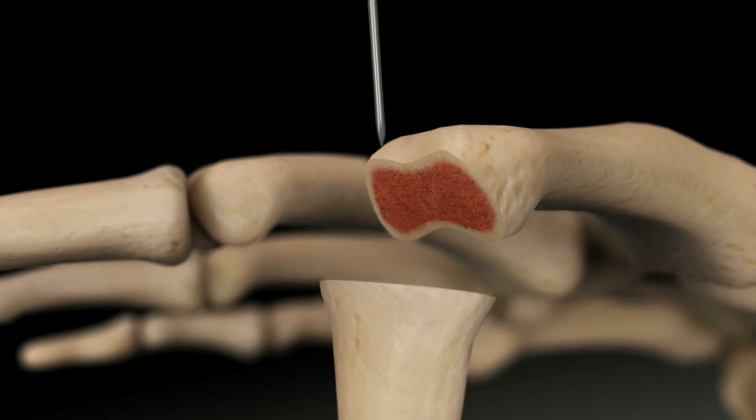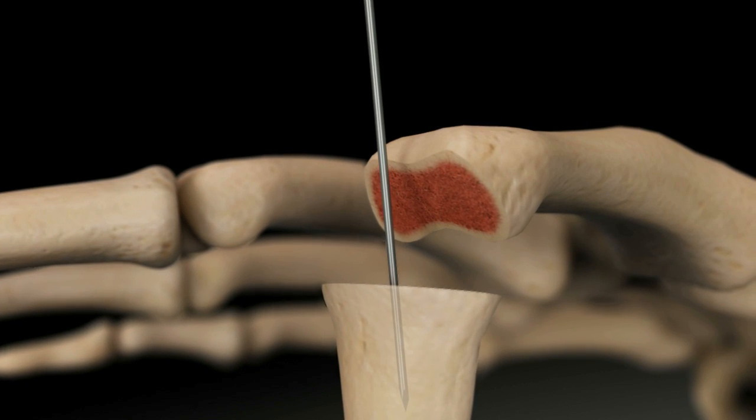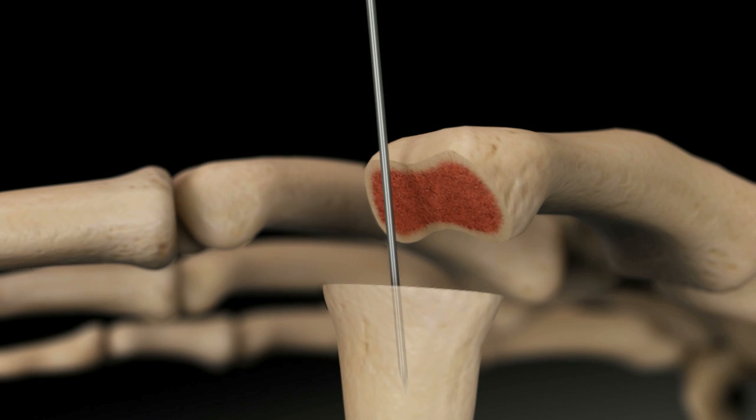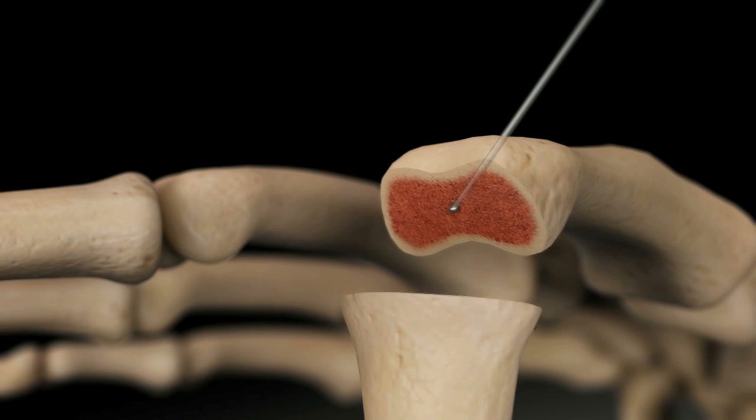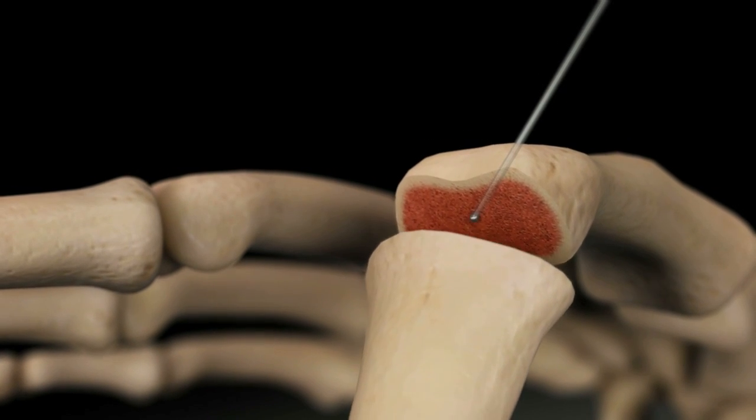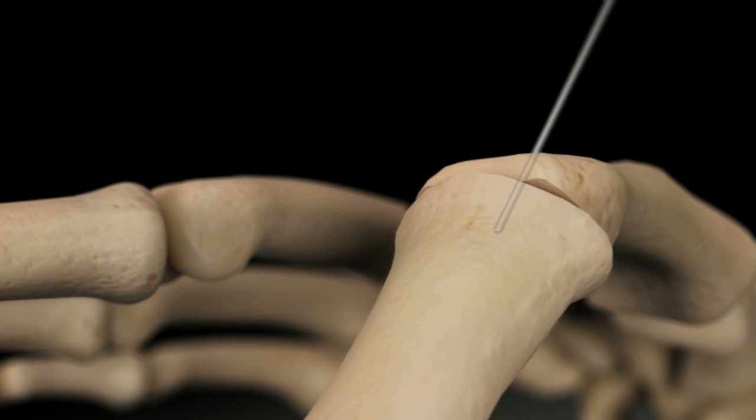Drive a 0.045 K-wire into the distal bone axially to create a guide channel. Remove the K-wire from the distal bone. From the center of the joint, drive the 0.045 K-wire into the proximal bone perpendicular to the joint surface.